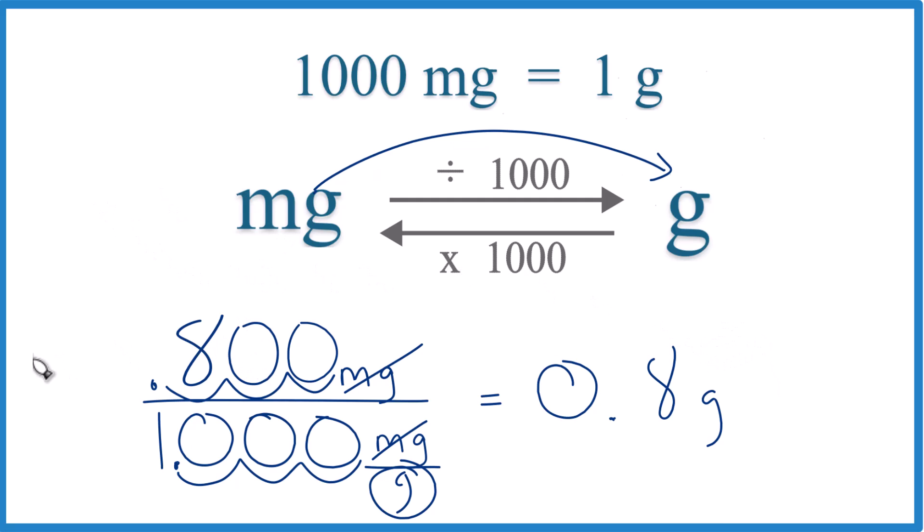This is Dr. B converting 800 milligrams to grams. The answer: 0.8. Thanks for watching.